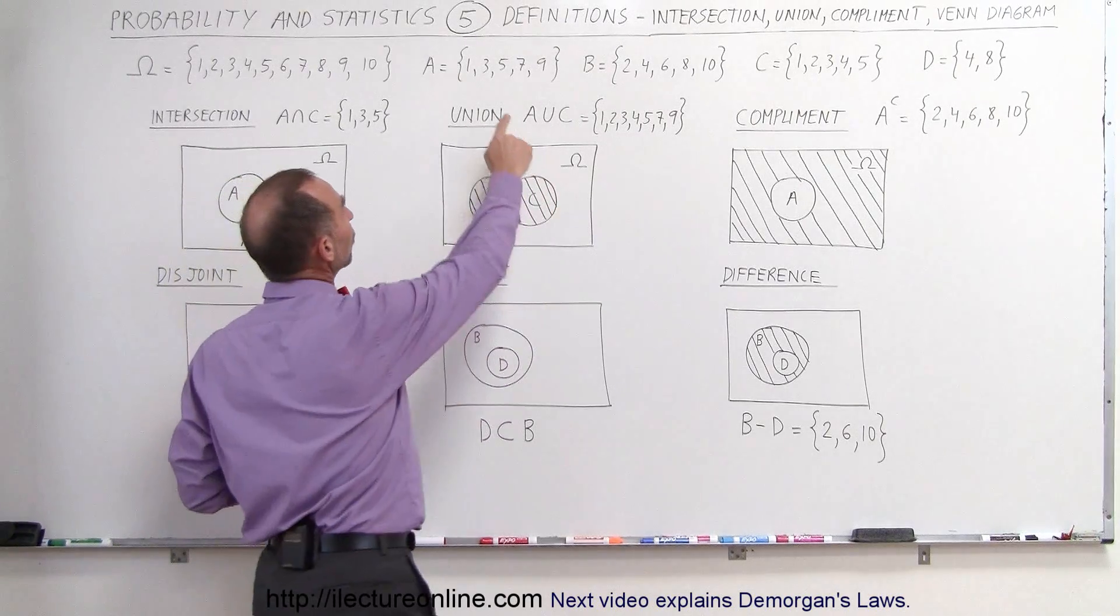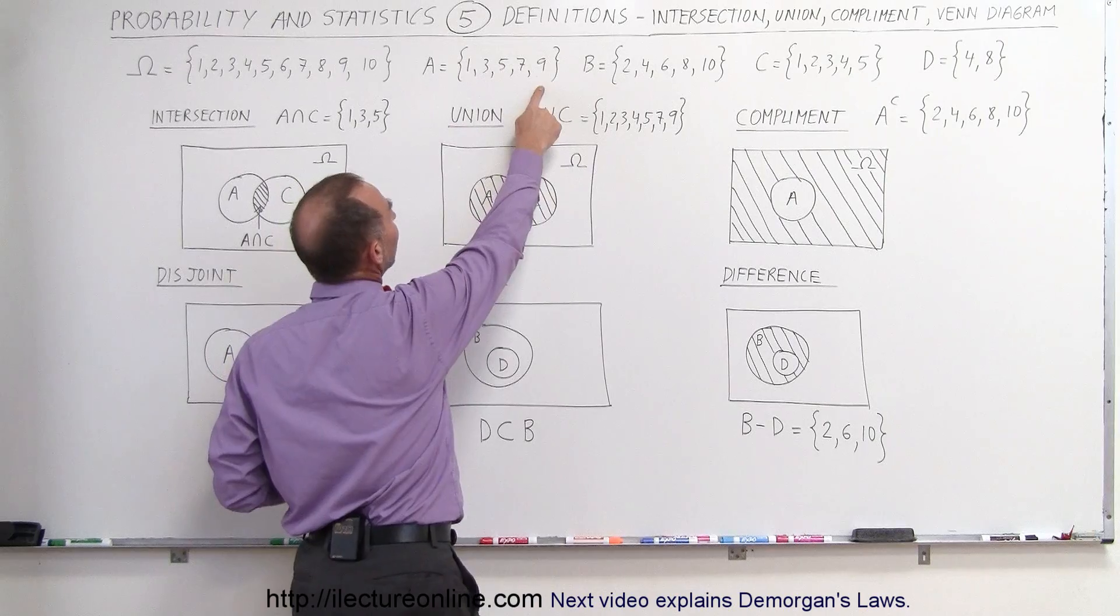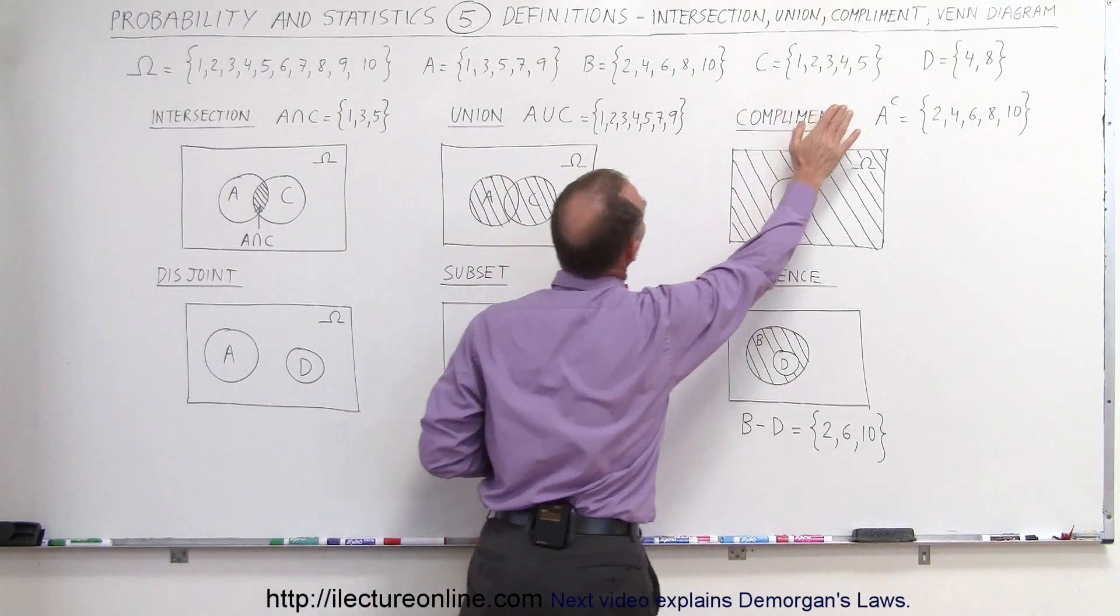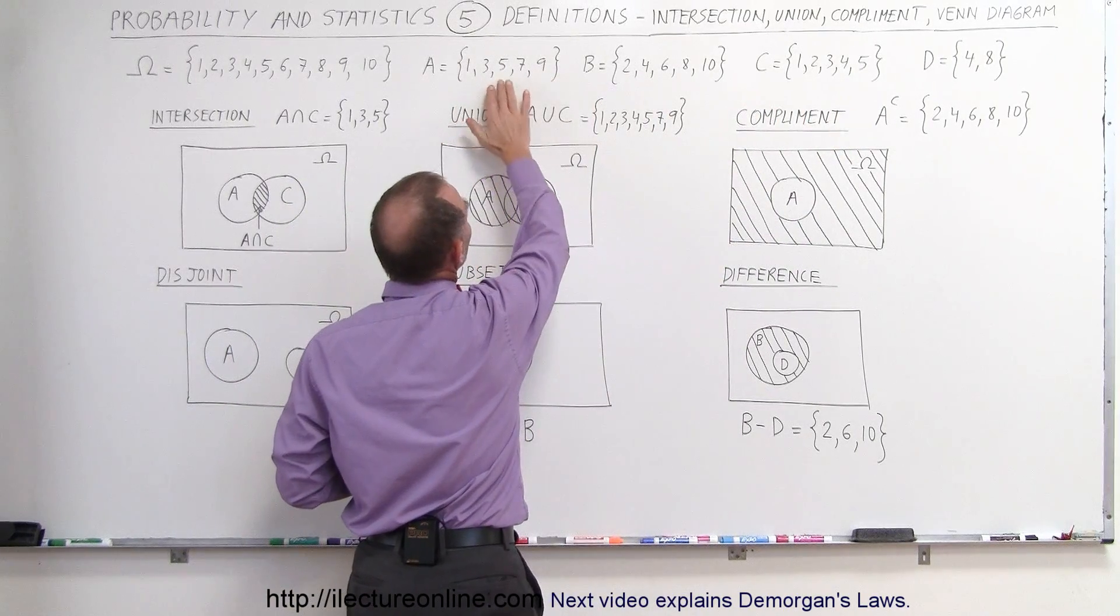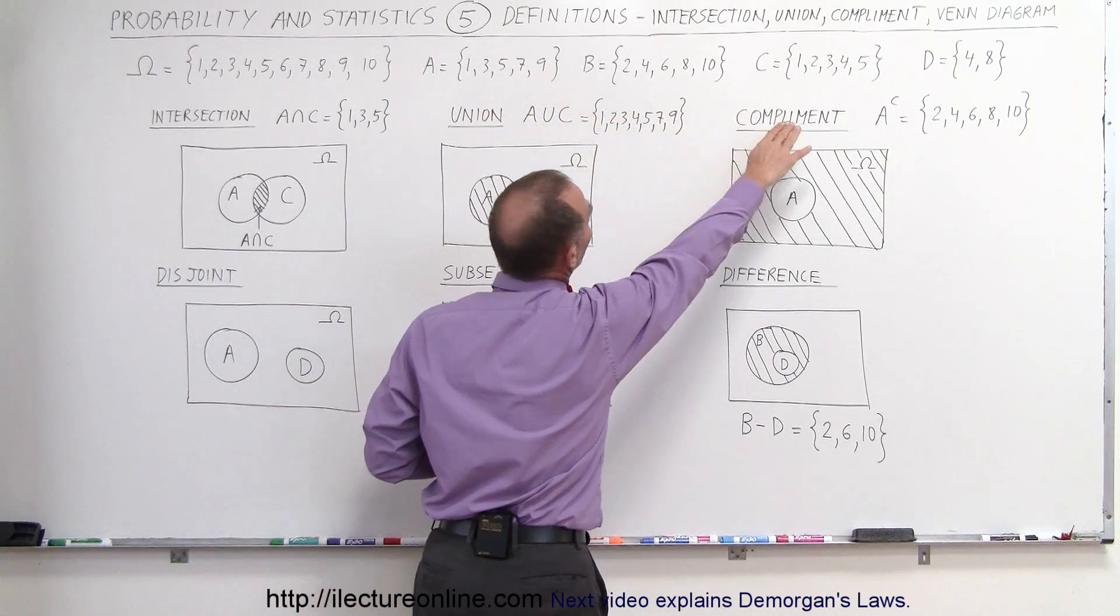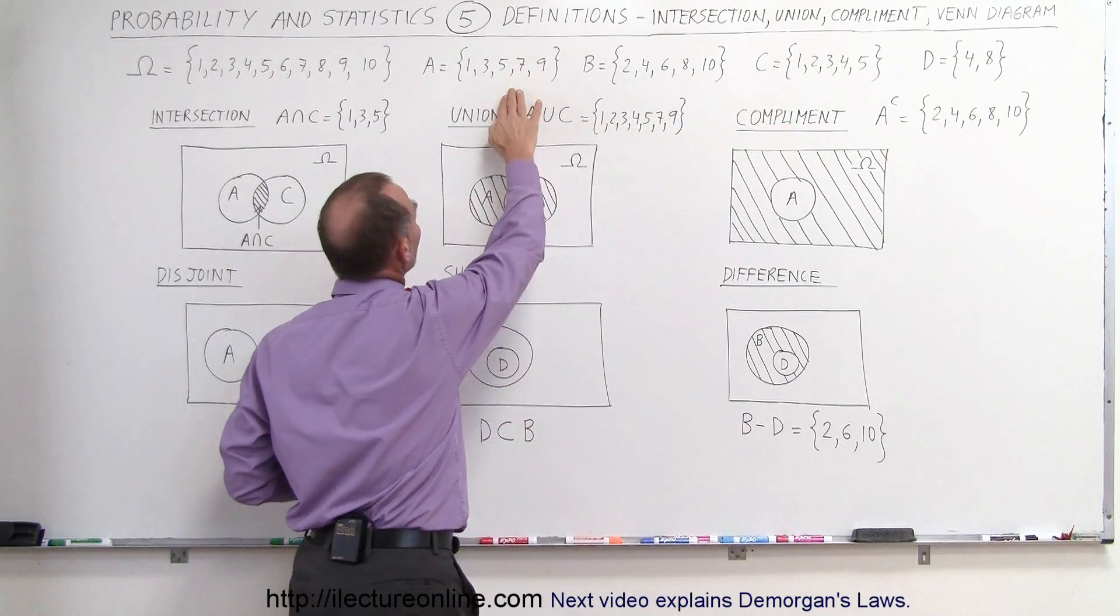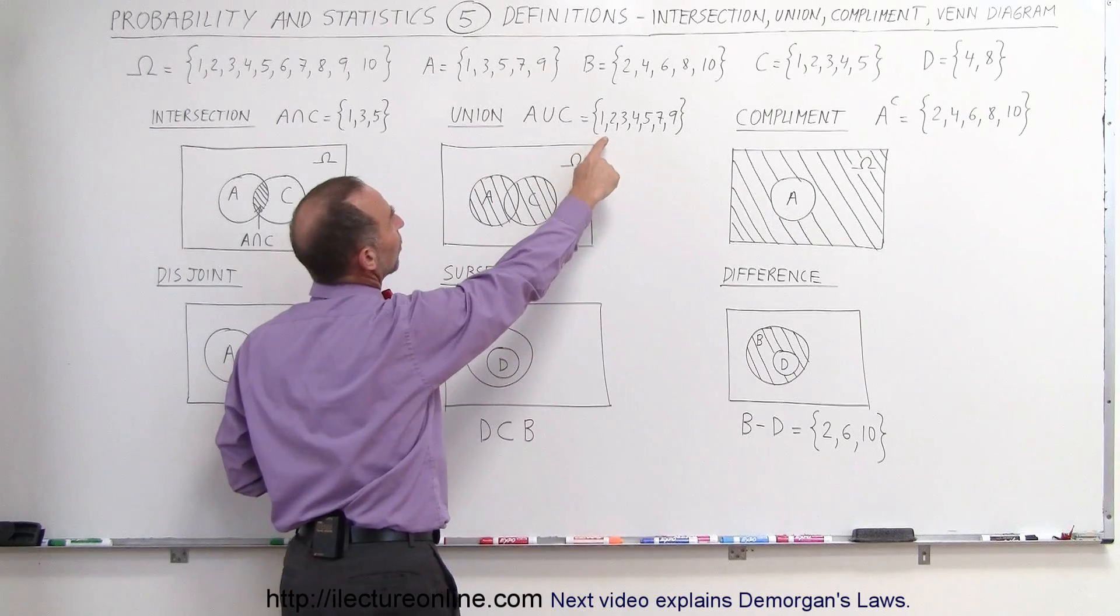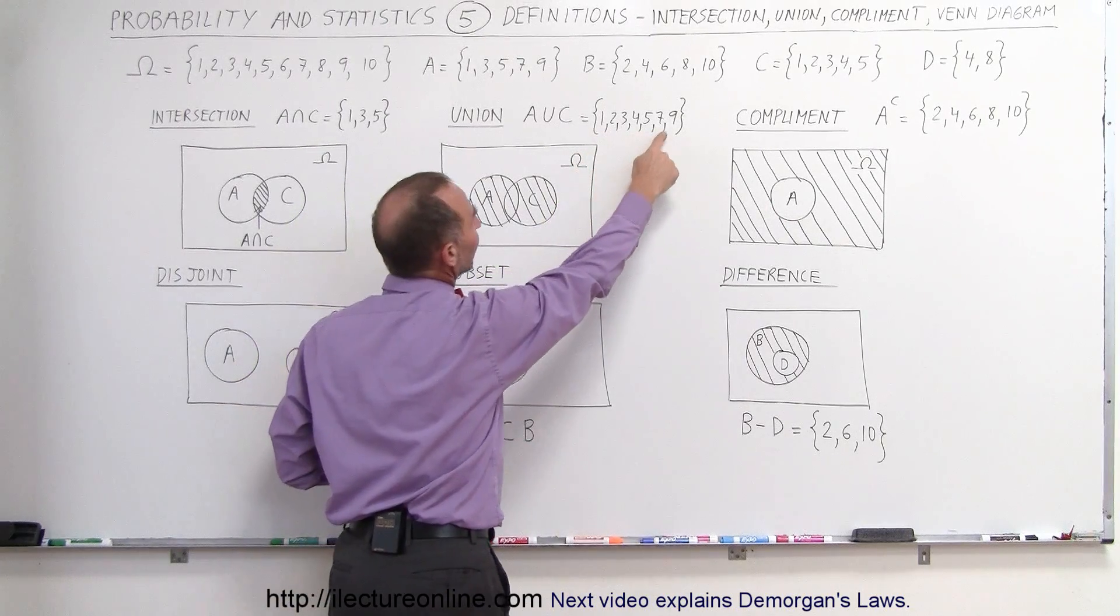Therefore all the numbers that belong to A are 1, 3, 5, 7, and 9. C is 1, 2, 3, 4, 5, so we know that 1, 3, and 5 are common, but 2 and 4 belong to C, and 7 and 9 belong to A. We include all the numbers, so therefore all the numbers are 1, 2, 3, 4, 5, 7, and 9.